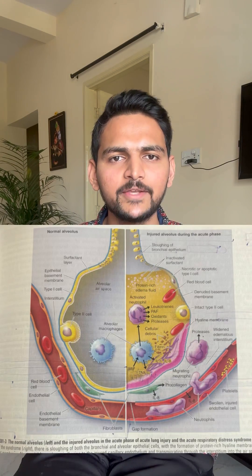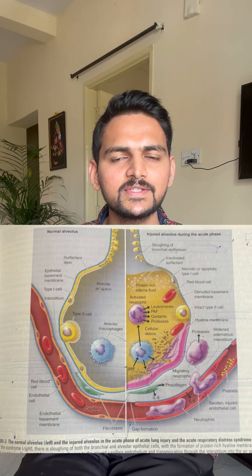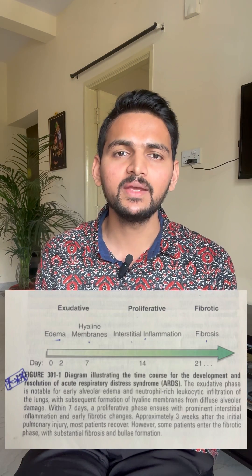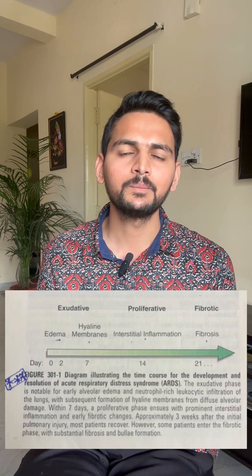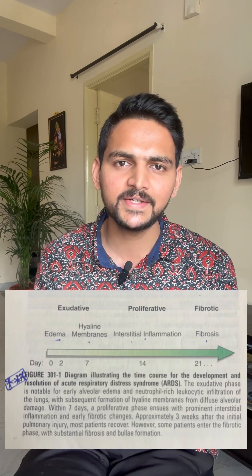In the exudative stage, alveoli are filled with exudate — that is leaked plasma. In the proliferative stage, the body fights to repair the injury through proliferation of epithelial cells, proliferation of cells that produce surfactants, and replacement of neutrophils by lymphocytes. Finally, in the fibrotic stage, the majority of patients recover over three to four weeks, but a few may undergo extensive fibrosis.